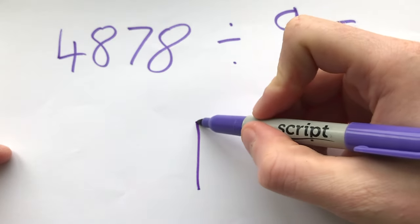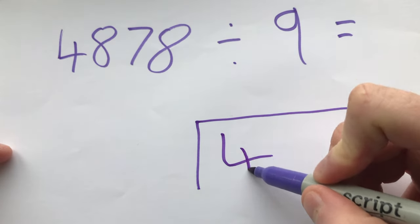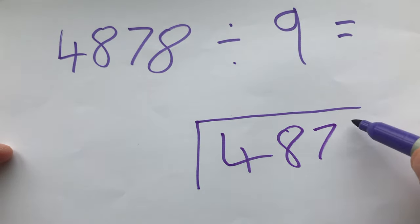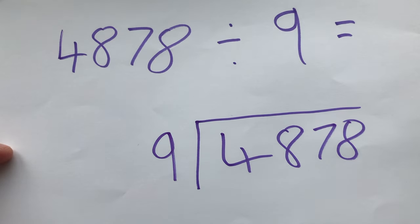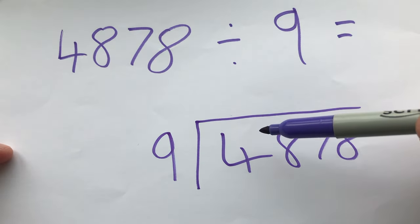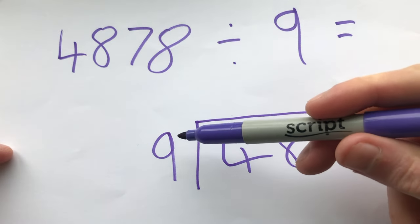Another example, we draw the bus stop method, 4, 8, 7, 8 and we're dividing by 9. So again we follow the step, how many 9s go into 4? Well they don't so we'll move across. How many 9s go into 48?